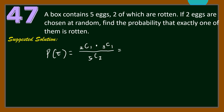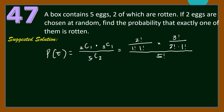Solving this: 2C1 equals 2, and 3C1 equals 3, so the numerator is 2 times 3 equals 6. For the denominator, 5C2 equals 5 factorial over 3 factorial times 2 factorial, which is 120 over 12, equal to 10. Therefore the probability is 6 over 10, which simplifies to 3 over 5.